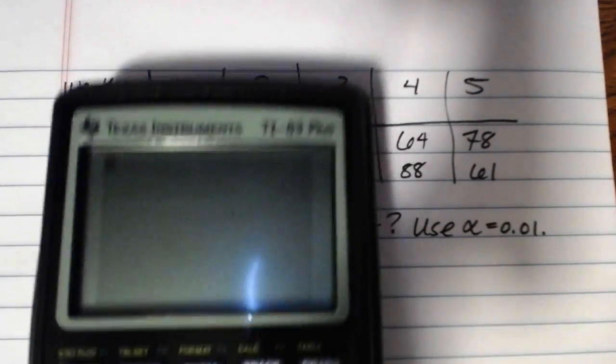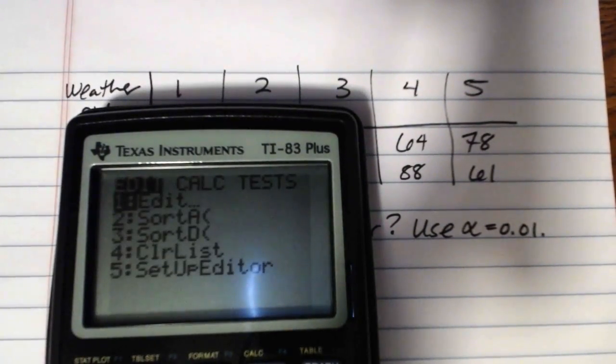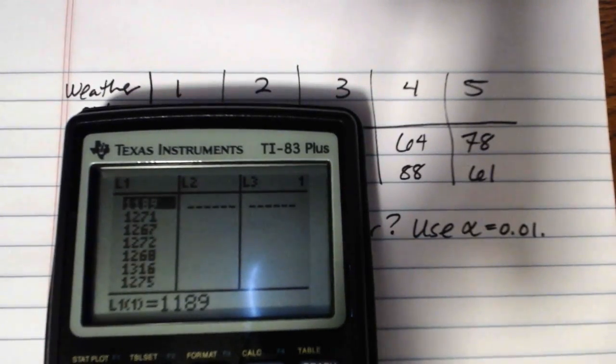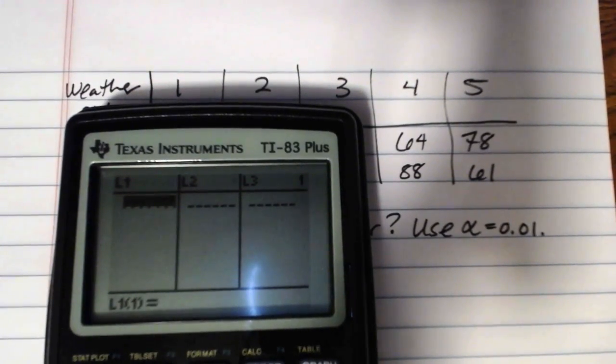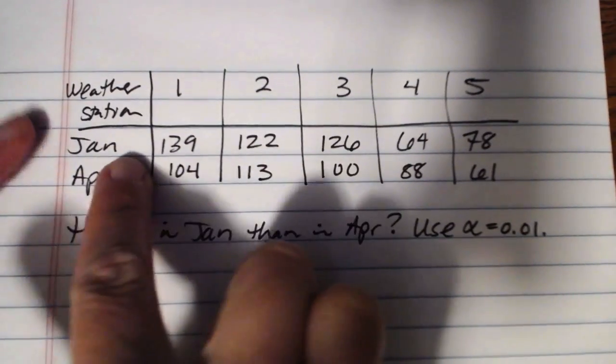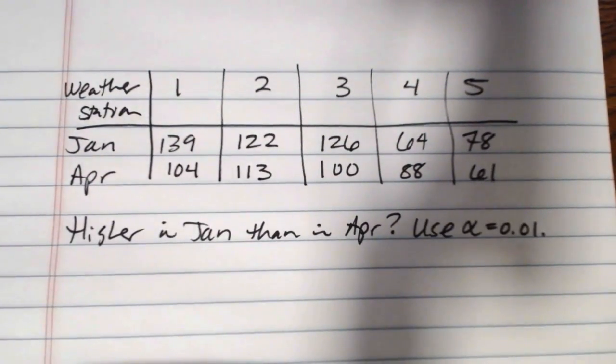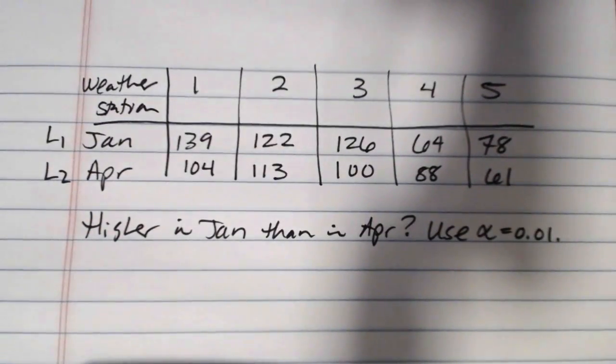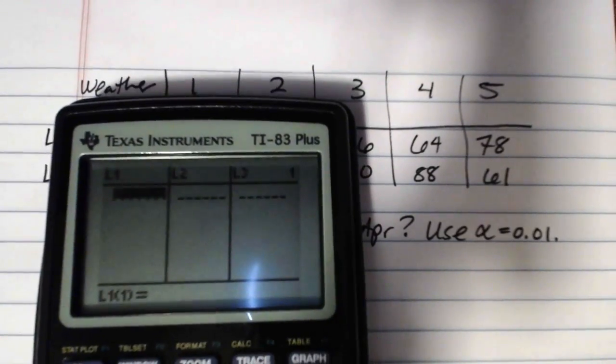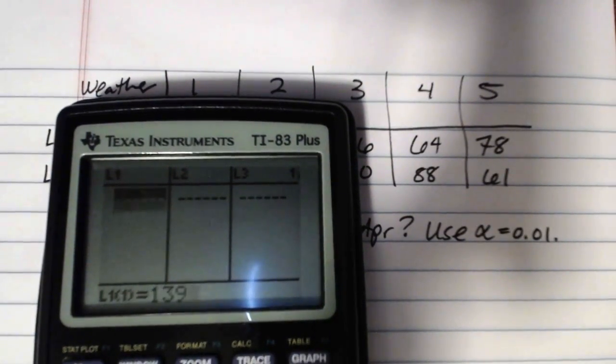So, here we go. We have data. We need to put that data into lists. So, you'll want to go into your stat and edit to find your lists. If you have any data in there, you'll want to clear it out. And then you will want to put the January data into the first list. So, all of this stuff is going to be L1, and the April data will be L2. So, in here, list one was 139, 122, 126, 64, and 78.